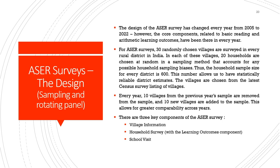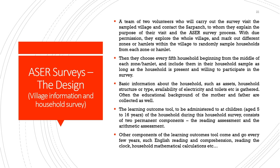There are three components in the ASER survey. First is village information. Second is the household survey, which is the most important component focusing on learning outcomes. Third is a school visit. A team of two volunteers visits the sample villages and contacts the Sarpanch, explains the purpose of their visit, explores the whole village, marks out different zones or hamlets, and uses the rule of five — choosing every fifth household beginning from the middle of each zone or hamlet — including them in the household sample as long as the household is present and willing to participate.